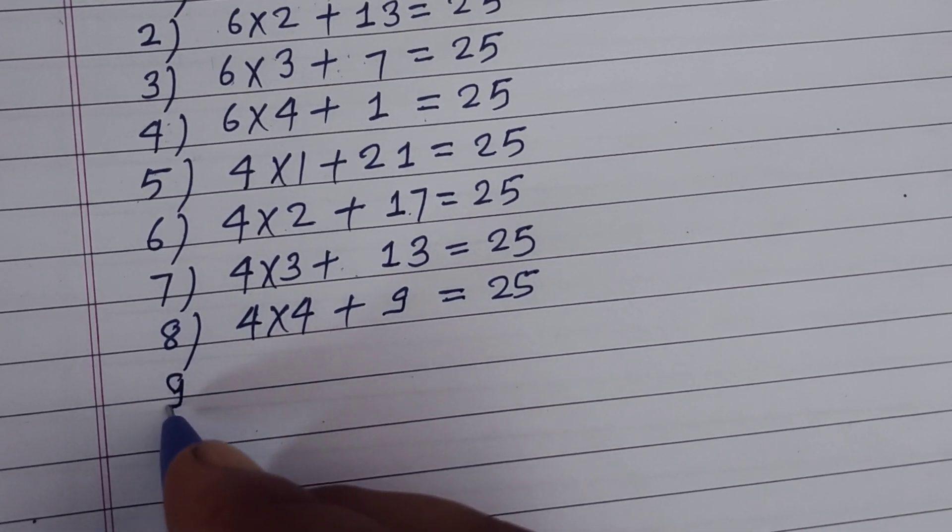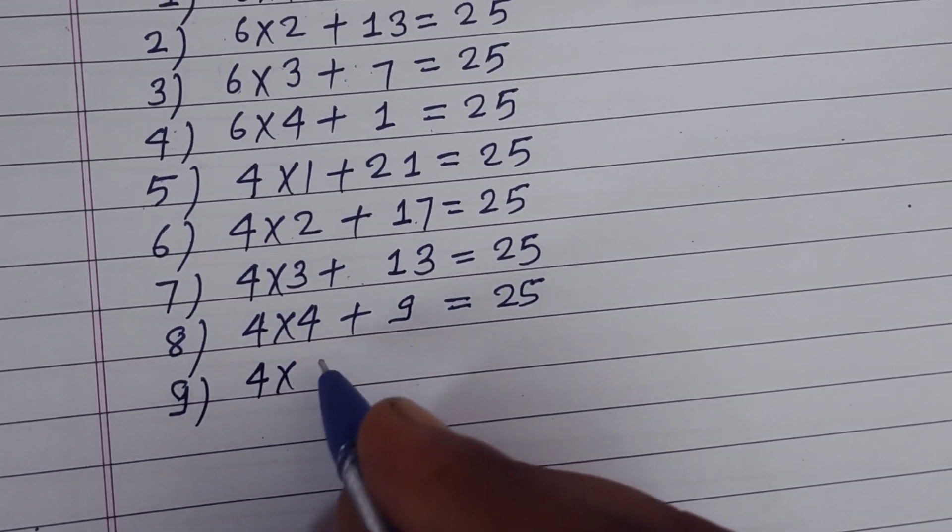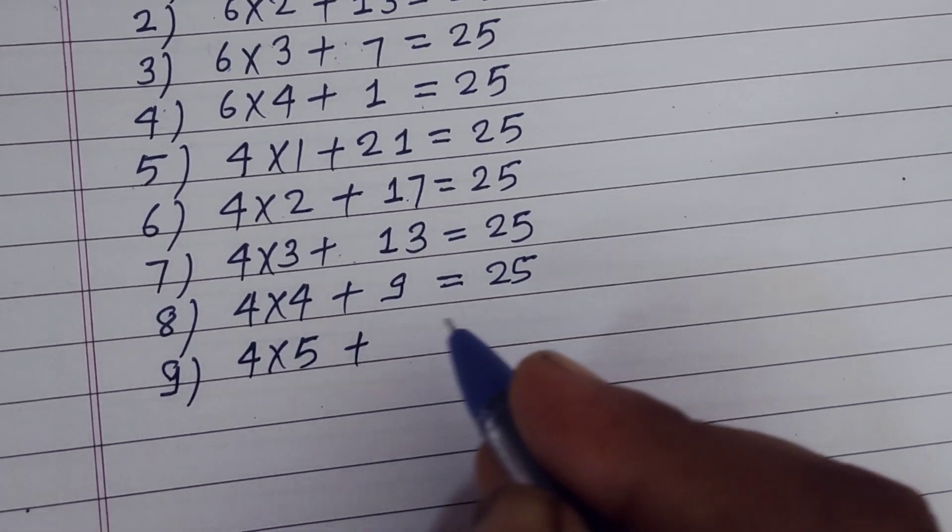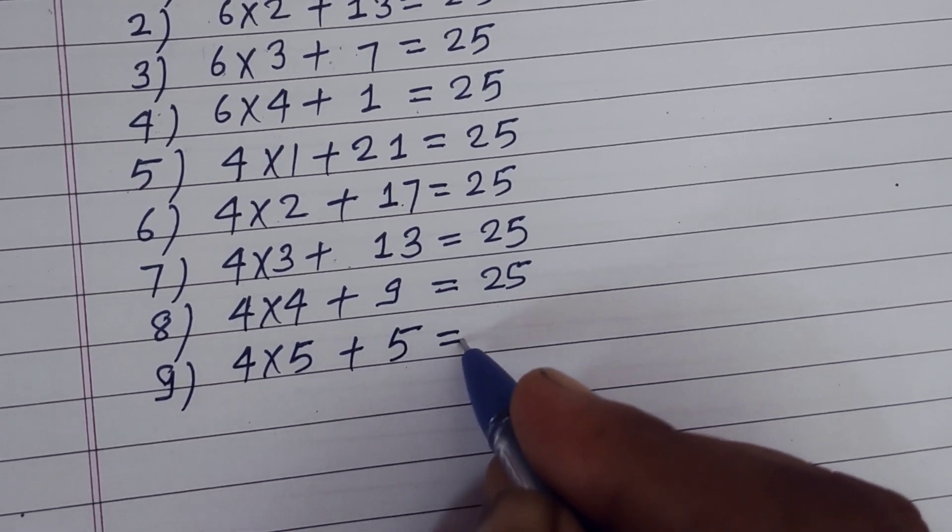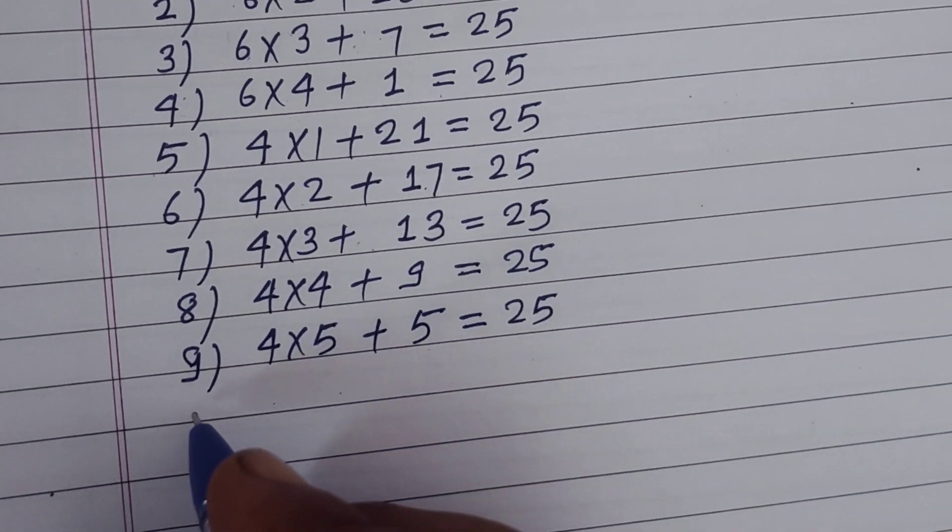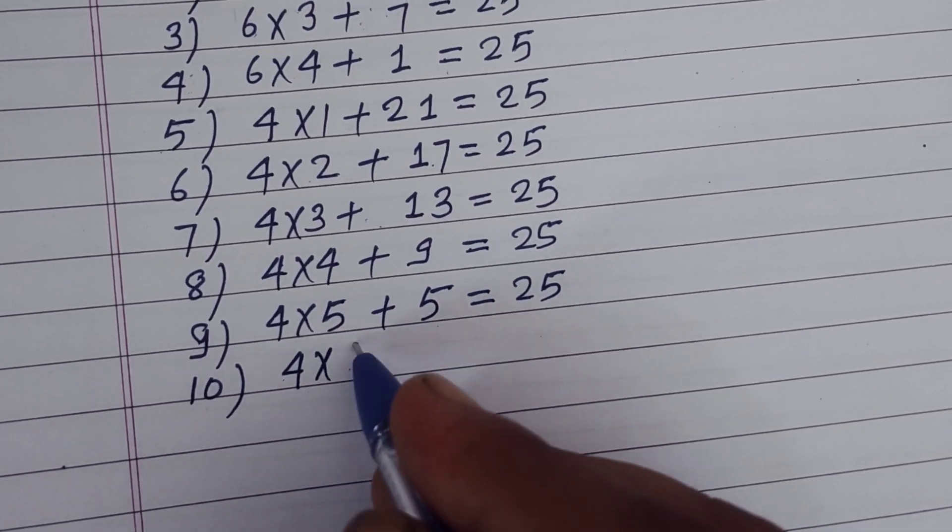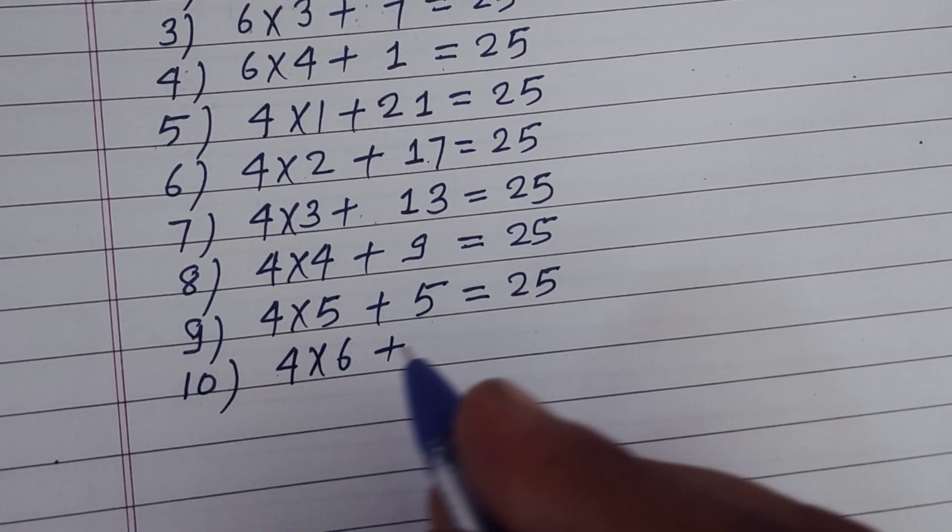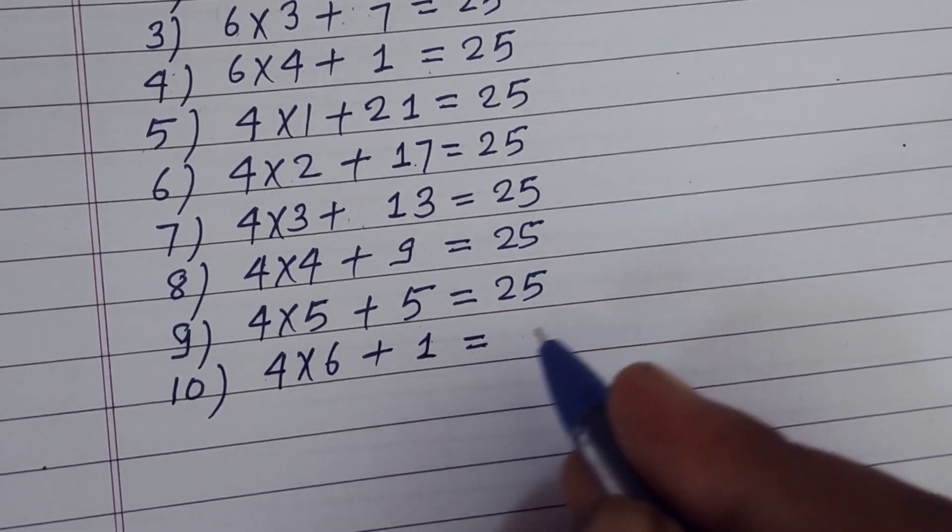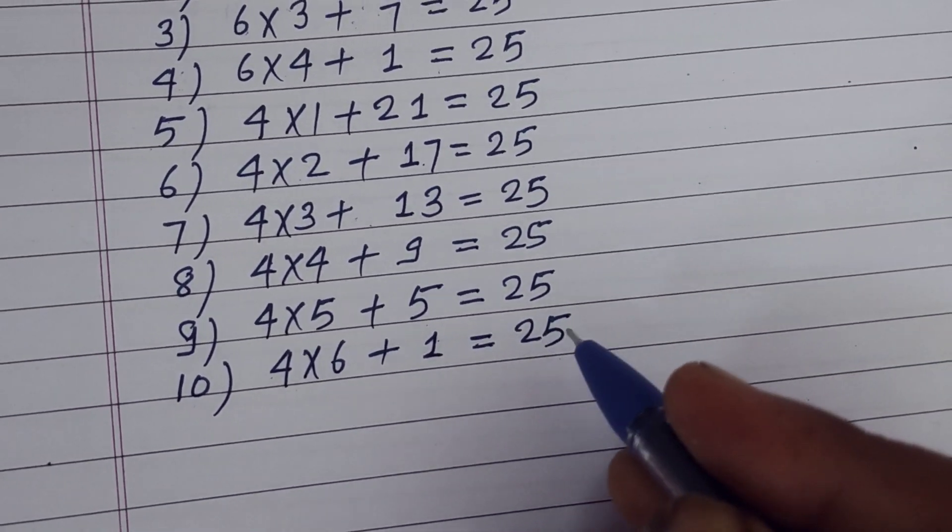Ninth condition is when he takes 5 fours plus 5 single runs, this is 25. Tenth condition is he takes 6 four sixes plus 1 run single runs, this is also 25.